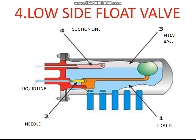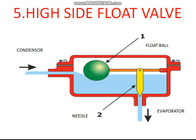The high side float valve is part of the high pressure system. High pressure liquid between the condenser and evaporator is regulated by the high side float valve. The liquid level on the low pressure side is maintained by the low side float valve.